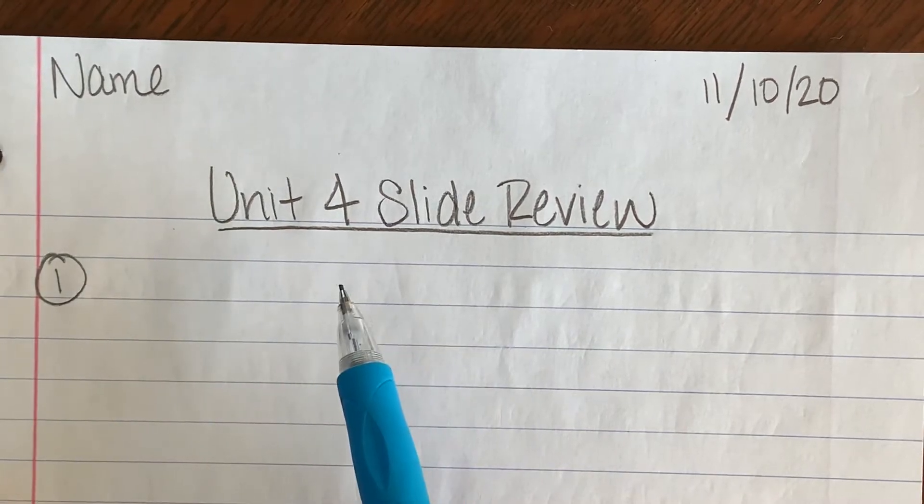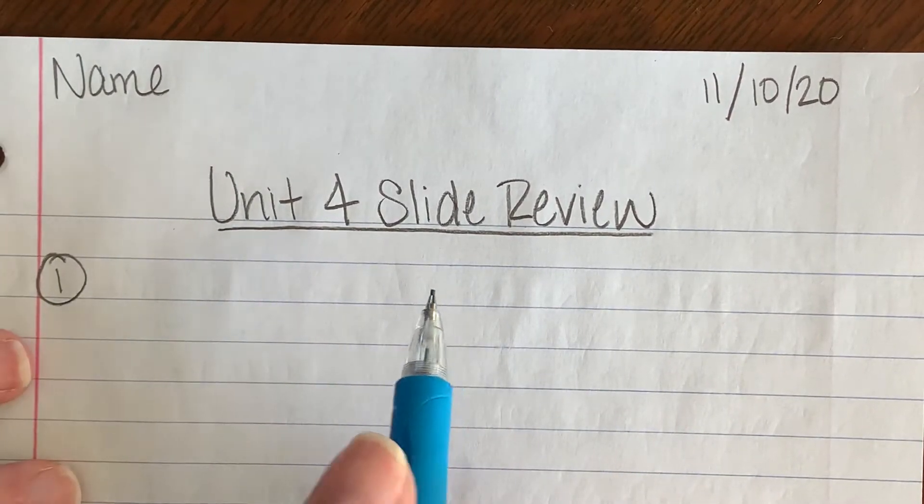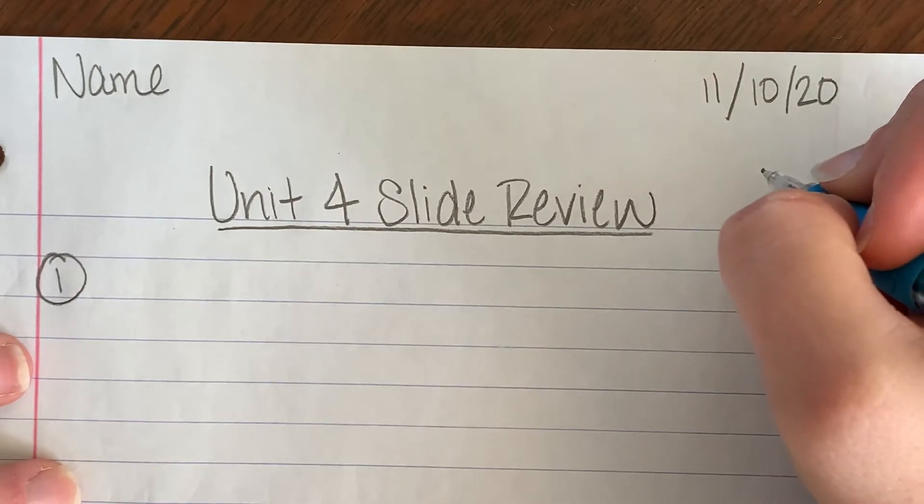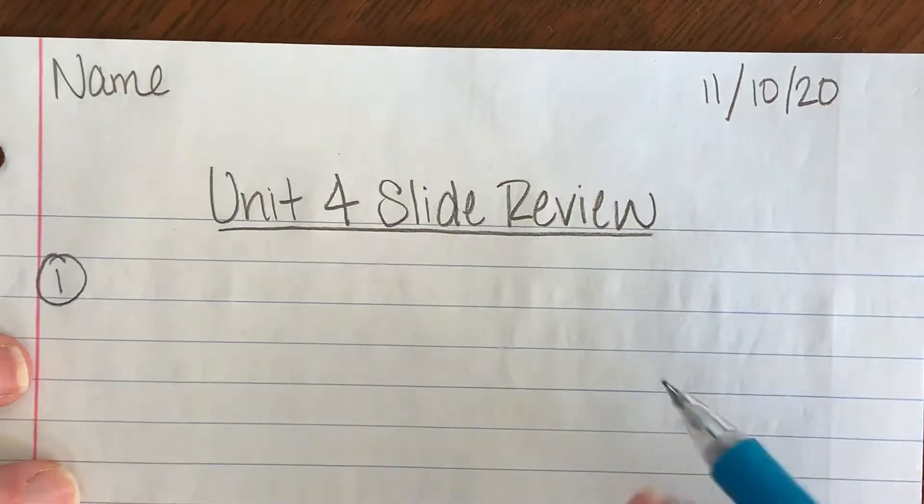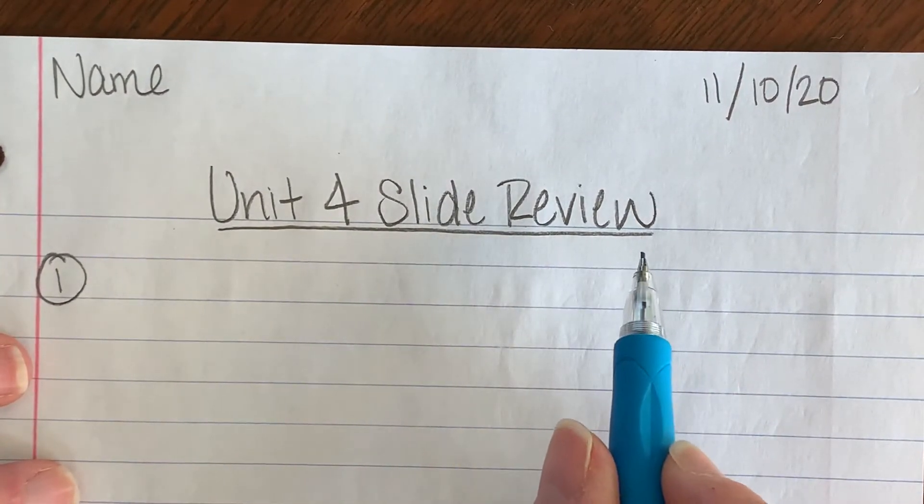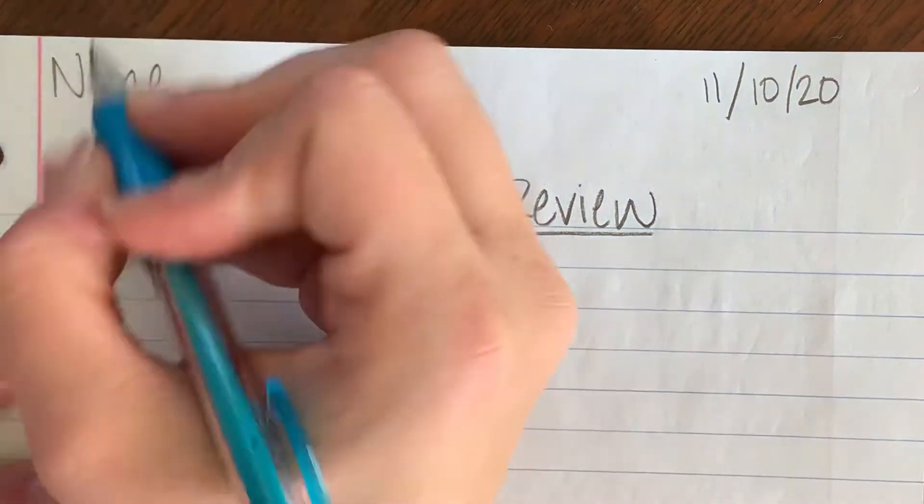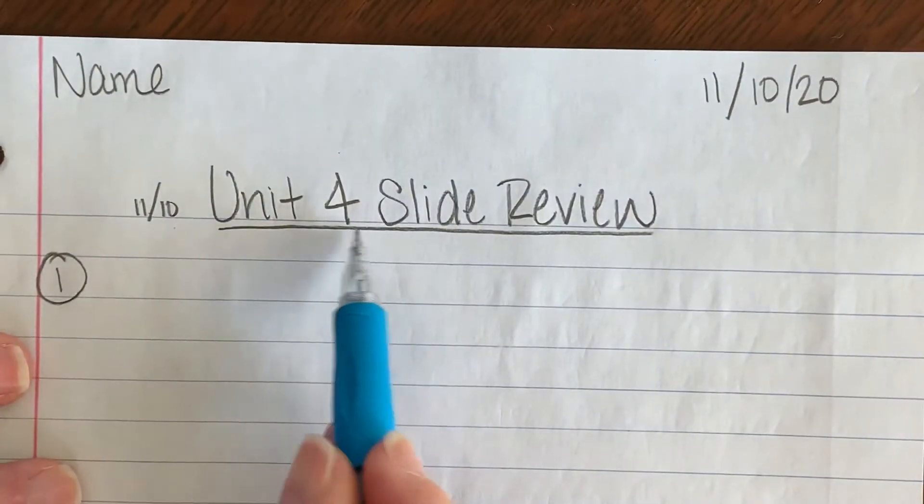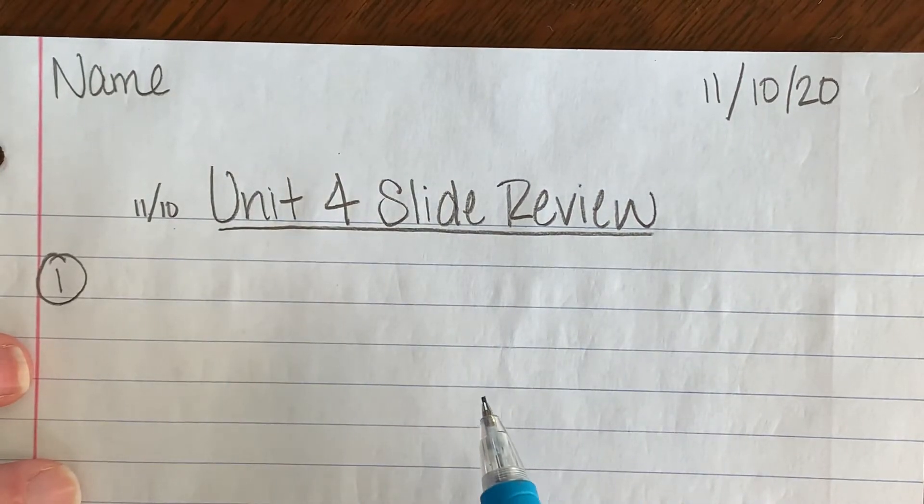And you are actually going to access all of your work on Canvas. So you are going to log into Canvas, you are going to go to the algebra course, you're going to click on modules, and then down at the very bottom of unit 4, you are going to see one that says 1110 unit 4 slide review, or unit 4 review slides, it's all the same.